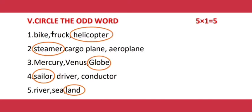Section five: Circle the odd one out. Number one: Bike, Truck, Helicopter. The correct answer is Helicopter. Number two: Steamer, Cargo plane, Aeroplane. The correct answer is Steamer.